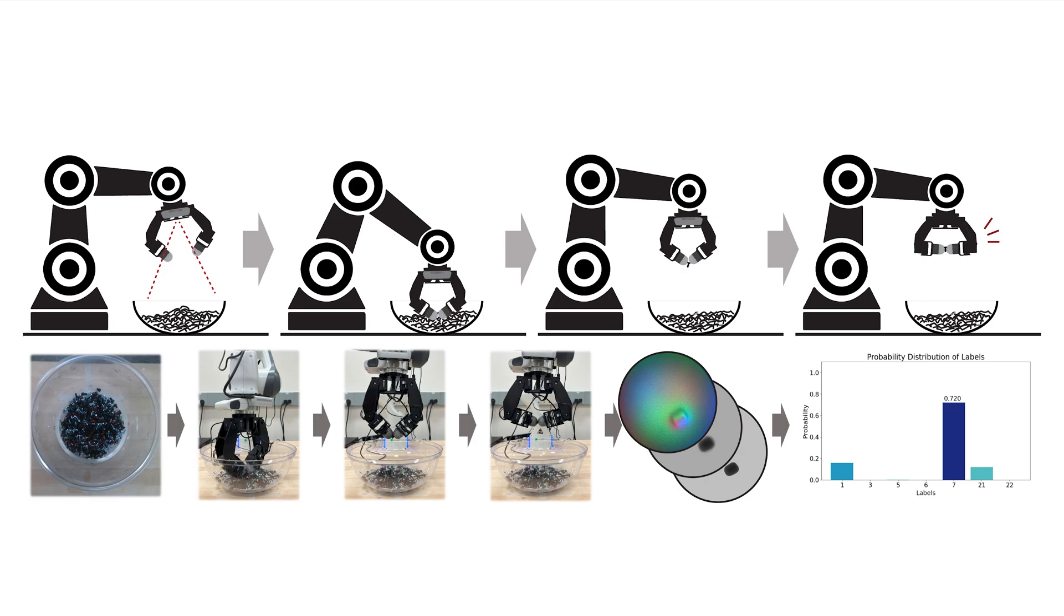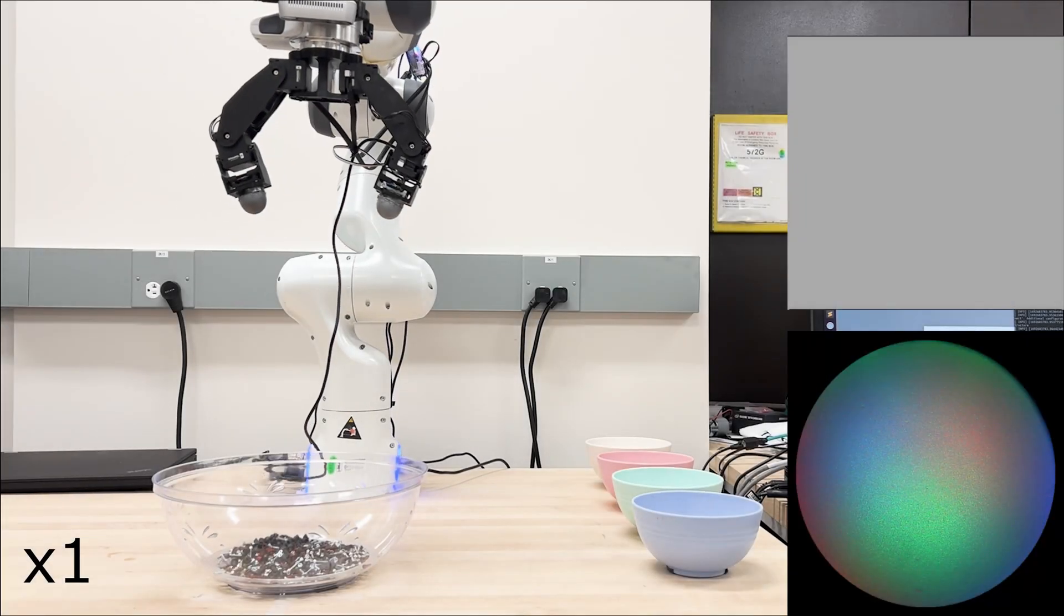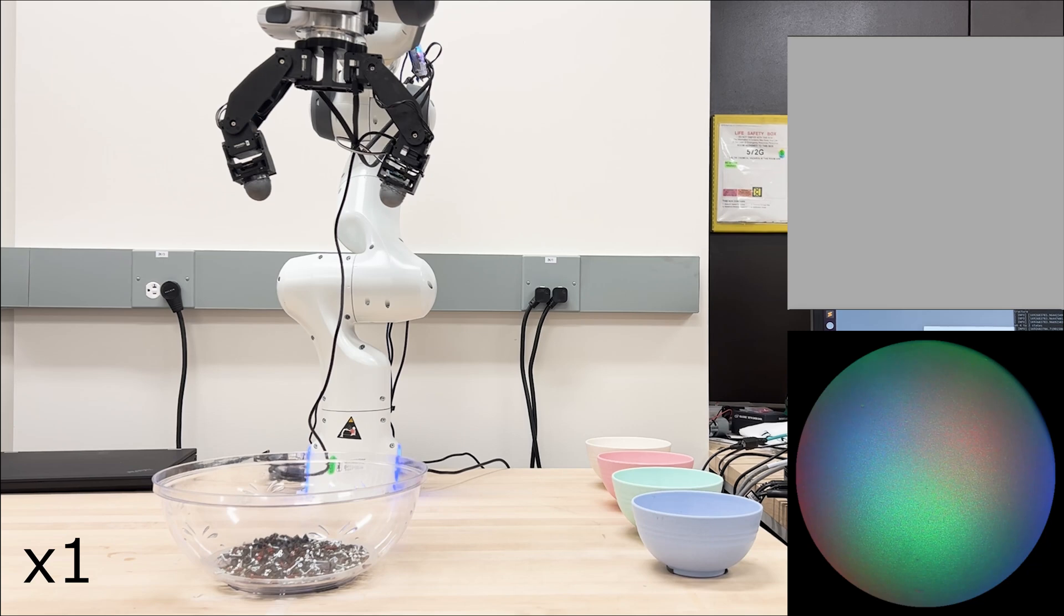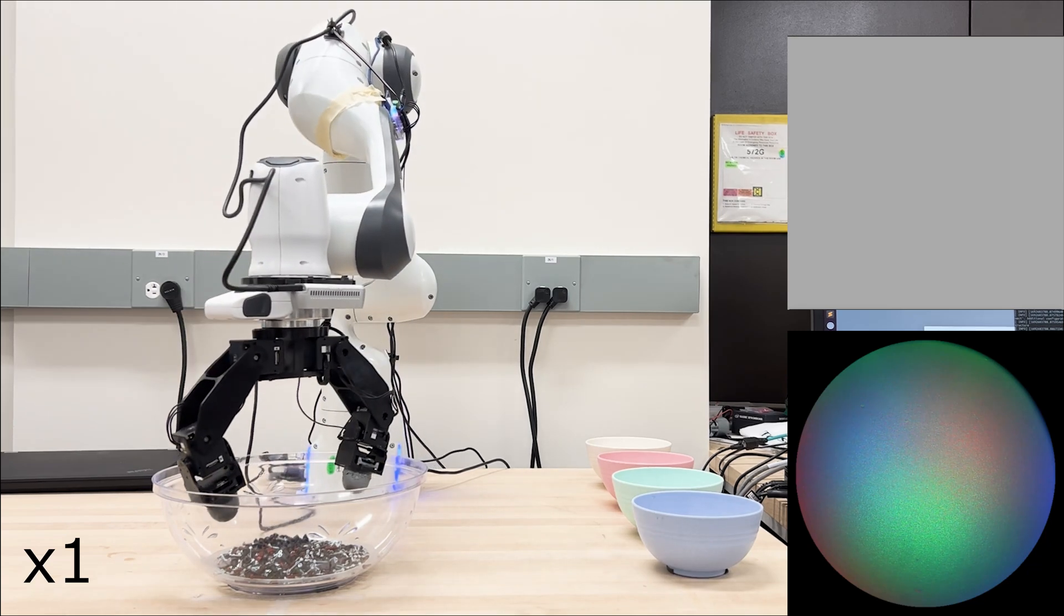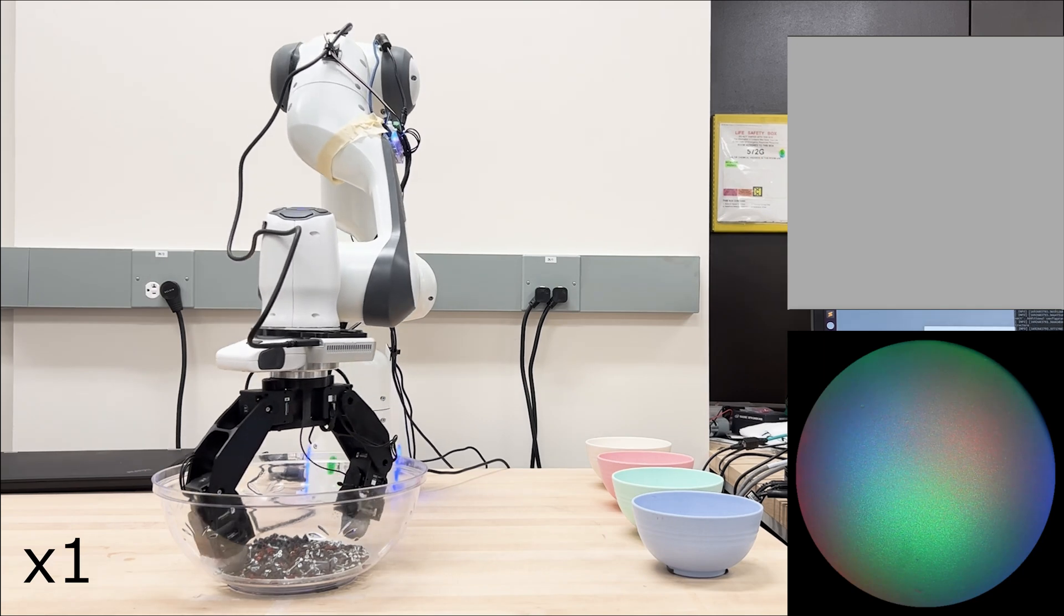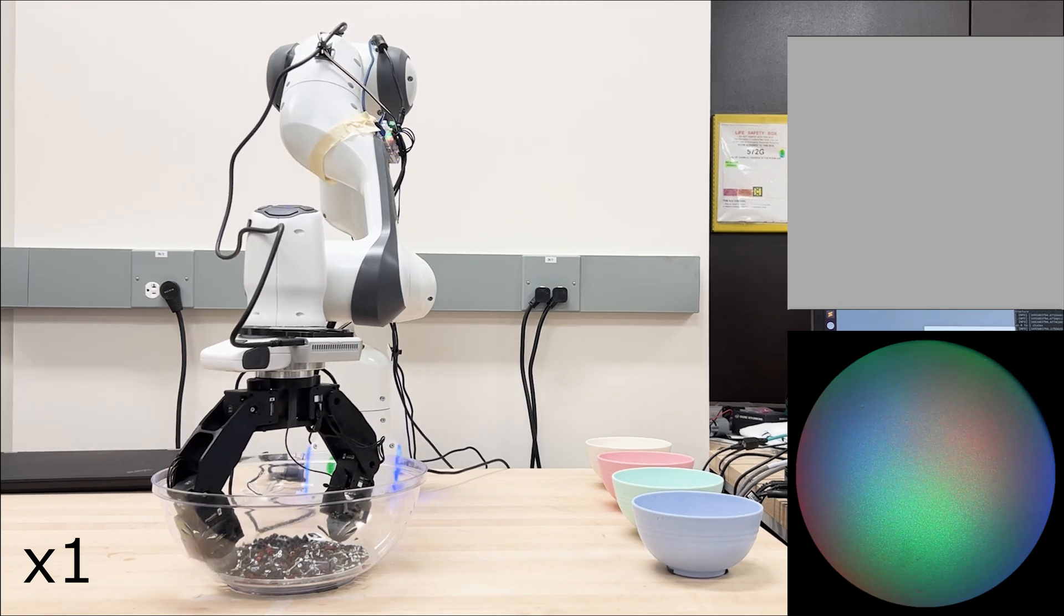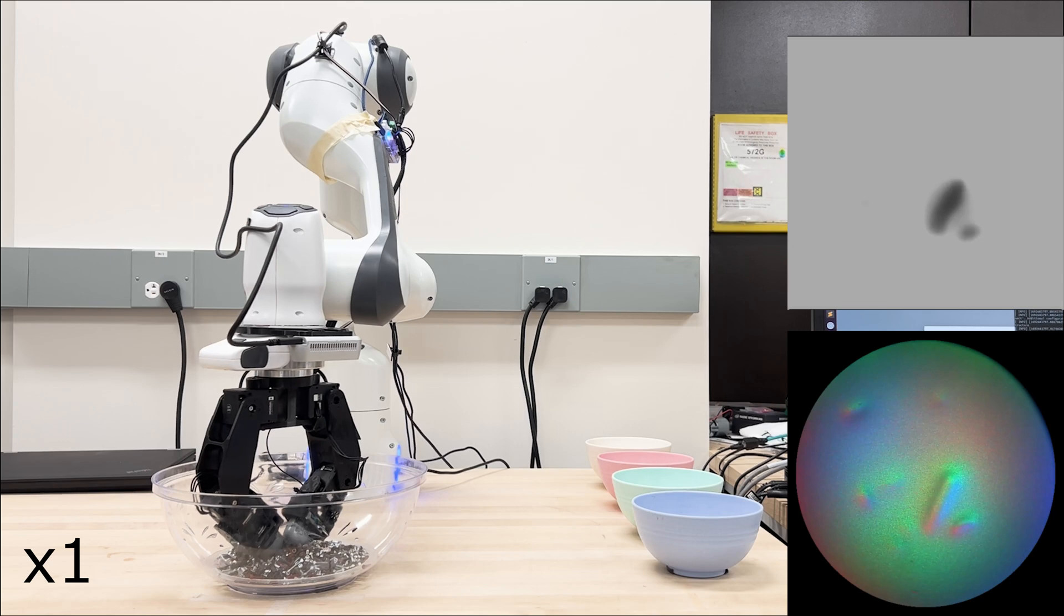Next, we demonstrate our process in the real world by attaching the gripper on the Franca robot arm. The right top image shows the depth estimation of the tactile sensor, and the right bottom image shows the RGB image from the dense tactile sensor.